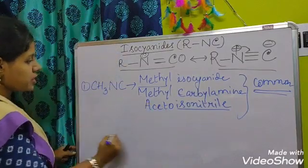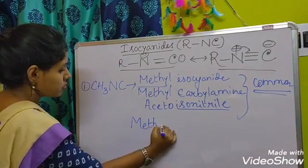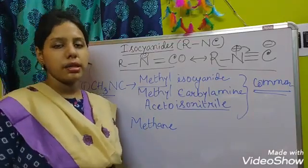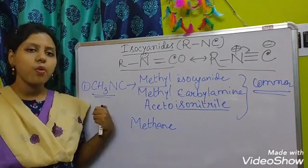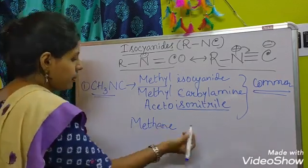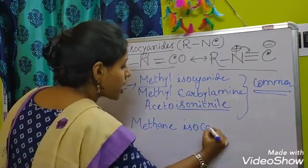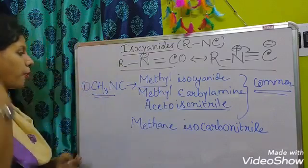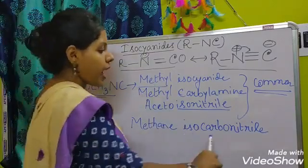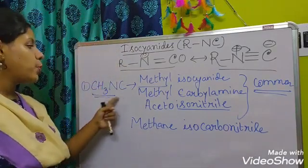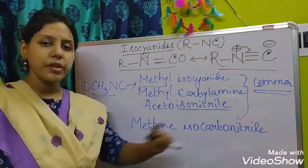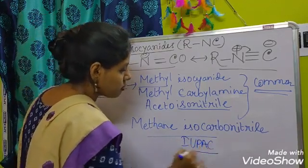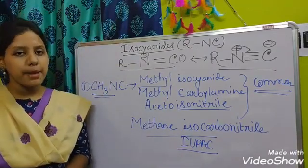In the IUPAC method, we do not need to count the total number of carbon atoms in the NC group — just the carbon atom of the alkyl chain. So for one carbon you write methane, then isocarbonitrile, because this total NC group is considered as carbonitrile. So the IUPAC name is methane isocarbonitrile. By this method we can also name other types of isocyanides.